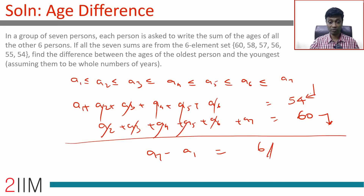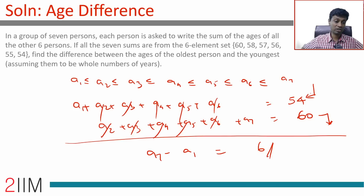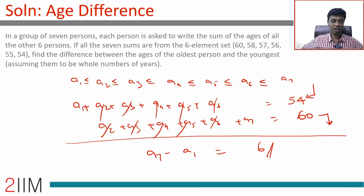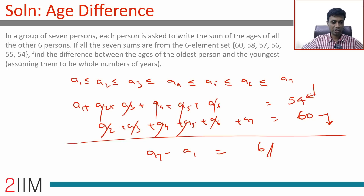The difference between the oldest and youngest person is 6. We didn't need to find the overall sum or each individual age — all we needed was the largest sum equation minus the smallest sum equation. The second method is clearly more elegant, but if you need to find all seven ages, the first method is more robust.